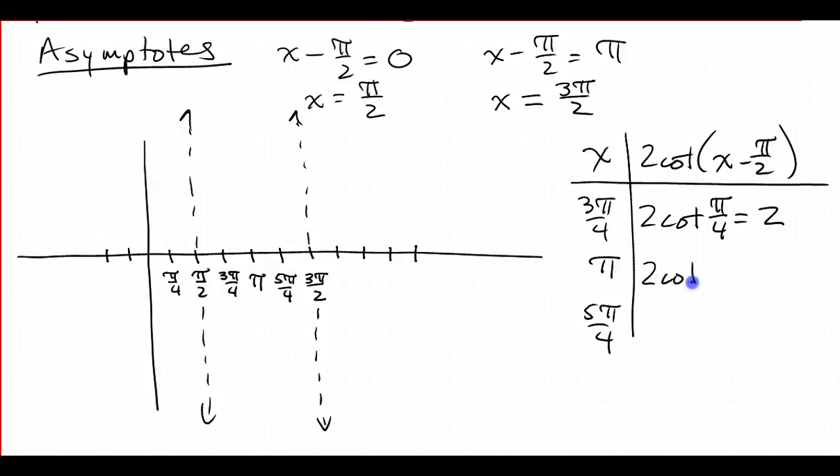And then I have 2 cotangent, pi minus pi over 2 is pi over 2. And I know at pi over 2, up at the top here, I've got 0, 1, and the cotangent is x. So that's going to be 0, so 2 times 0 is 0.